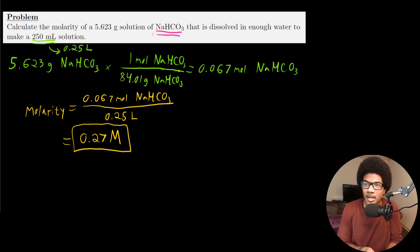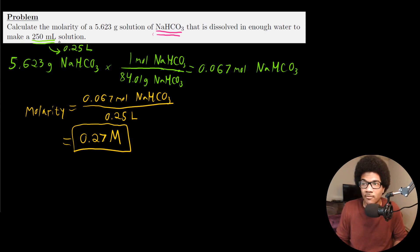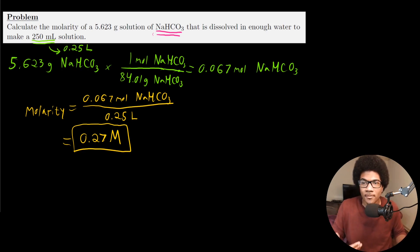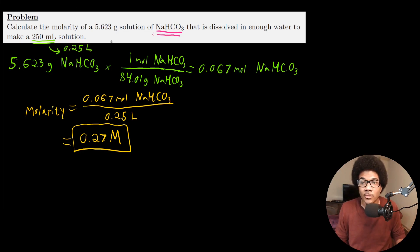That was a pretty straightforward example. The only things you had to do were convert your mass to moles and make sure you're using the right volume units — liters — to calculate the molarity properly. So that gives you an introduction into how we quantify the composition of a solution using molarity, and these are pretty easy to calculate when you're given the mass of your solute.